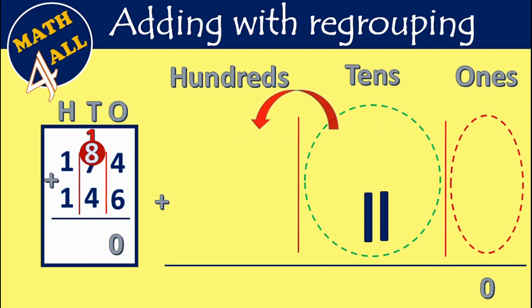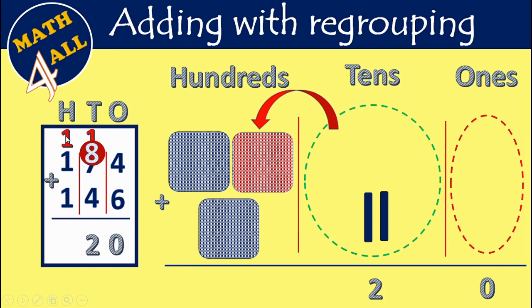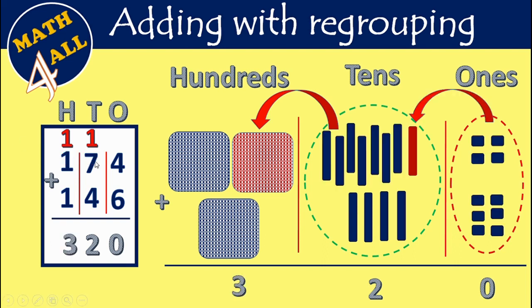Now let's add in the hundreds place: 1 plus 1 equals 2, then after 2 — 3. So 174 plus 146 equals 320. This is the meaning of regrouping: when we get two digits in the same place, we carry up 1 to the next place. That was our lesson — thank you!